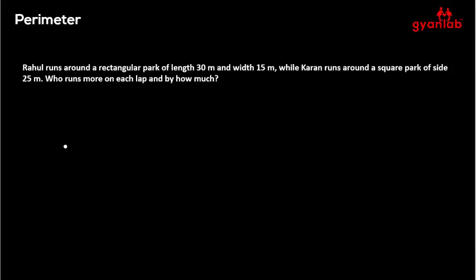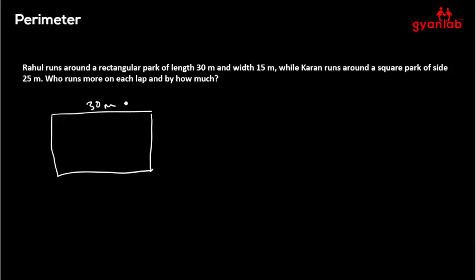The question says: Rahul runs around a rectangular park of length 30 meters and width 15 meters. Let me draw the park — it has a length of 30 meters and a width of 15 meters. It's a rectangular park, and we'll name each corner A, B, C, D.